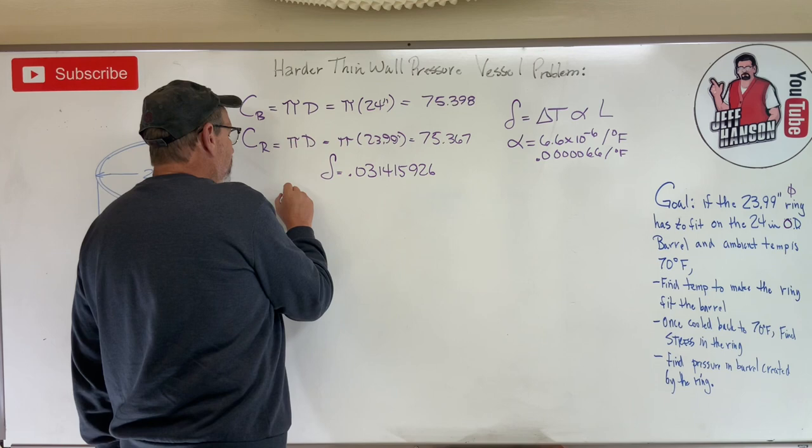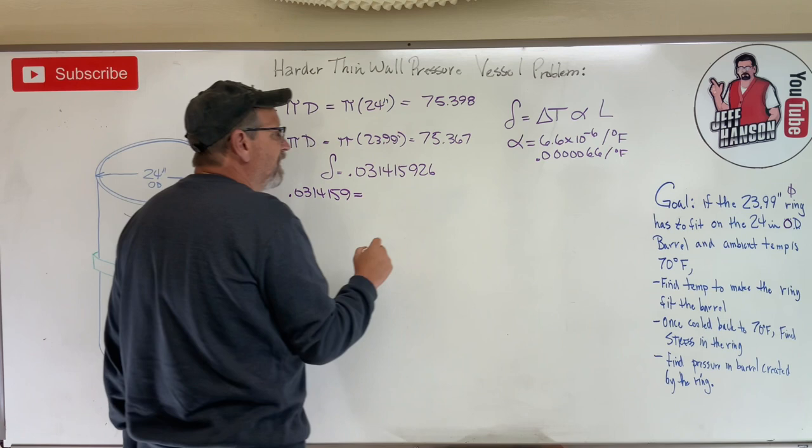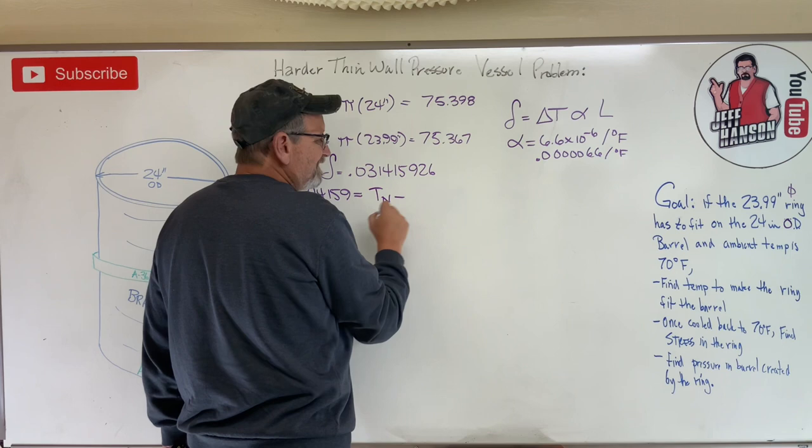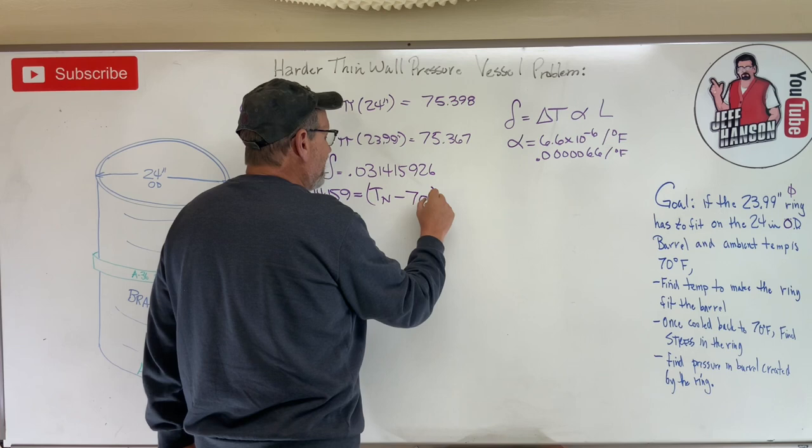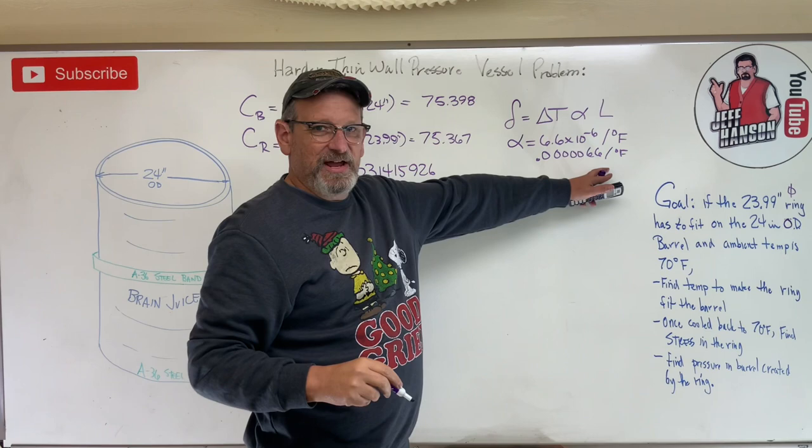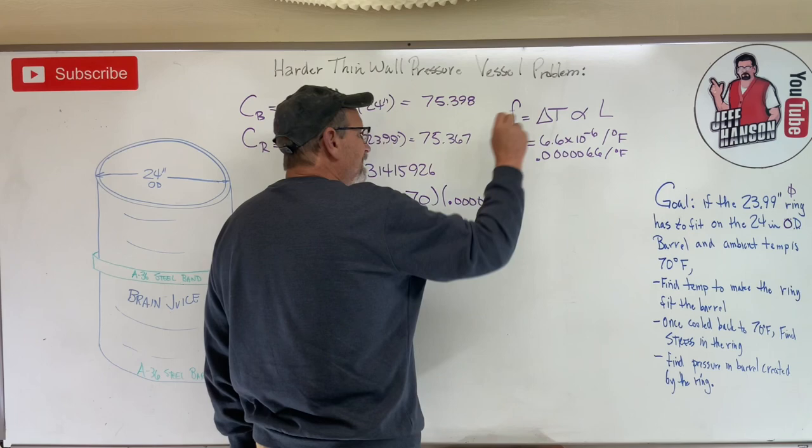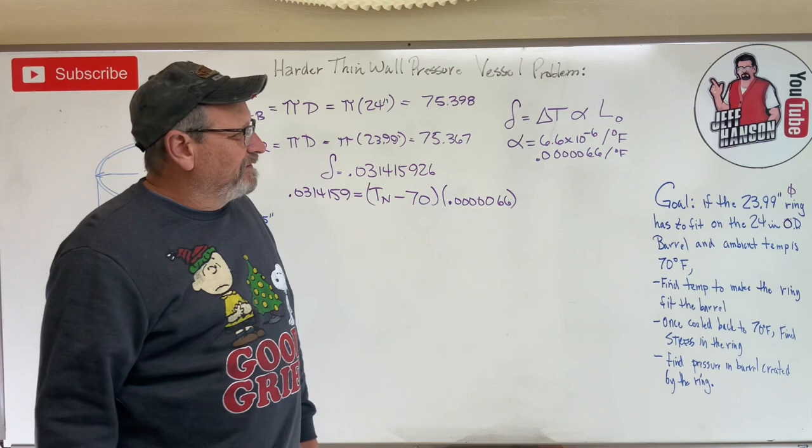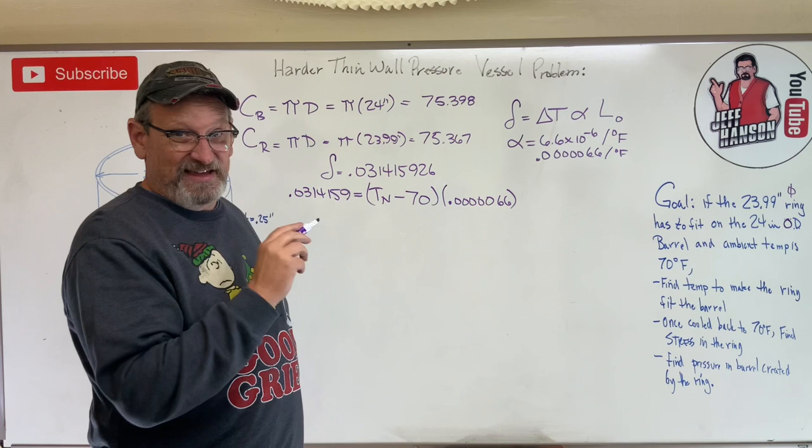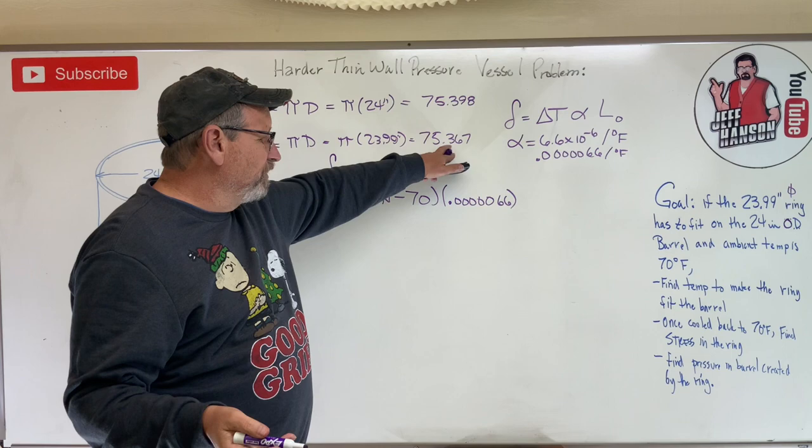Let's see if we can find that temperature that it takes to make that ring fit on the barrel. The delta is here, so 0.031415926 equals ΔT - that's temperature new minus temperature original - and that's going to be in degrees F, times α which is 0.00000656 per degree F, so the F and the per degree F cancel out. And then what is Lo? That is always in that equation the original length of the thing we're trying to heat up. So what are we trying to heat up? The ring. So that's the number I need to use for L: 75.367.